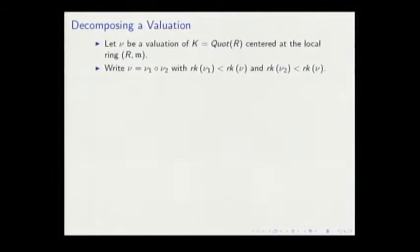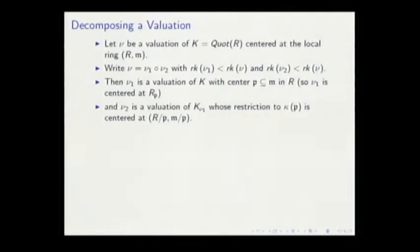However, these valuations ν₁ and ν₂ are not—well, ν₁ is in the same field but centered in a slightly different ring. There is a center of the valuation P that is the intersection of the maximal ideal of the valuation in R. Then this valuation ν₁ is centered at R localized at P. The valuation ν₂ is a valuation on the residue field of ν₁, and the center is R modulo P.